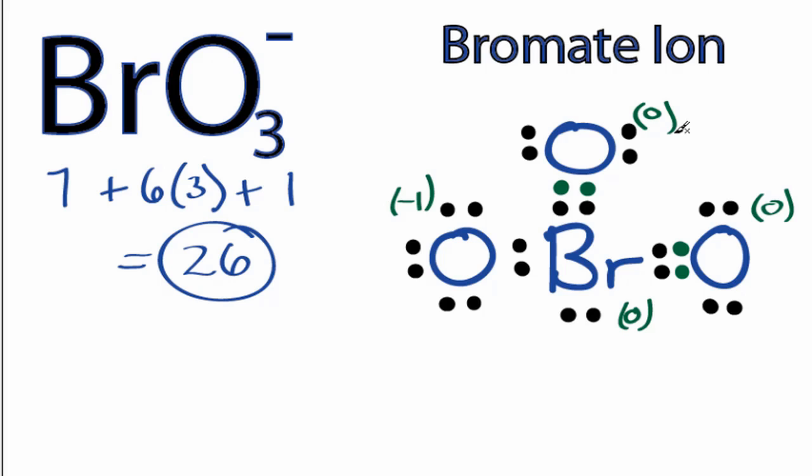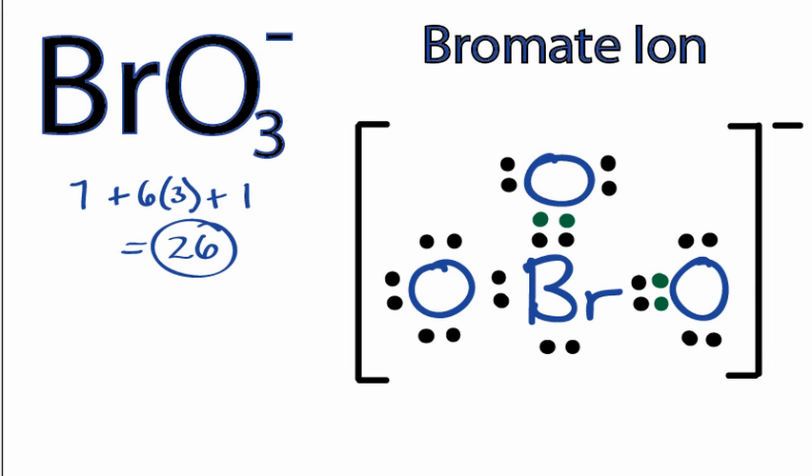That makes sense. The total formal charge here is negative 1, and that matches with the negative 1 here. One last thing we need to do. This is a negative ion, the BrO3 negative ion, bromate ion. We need to put brackets around the structure to show that it is a negative ion.